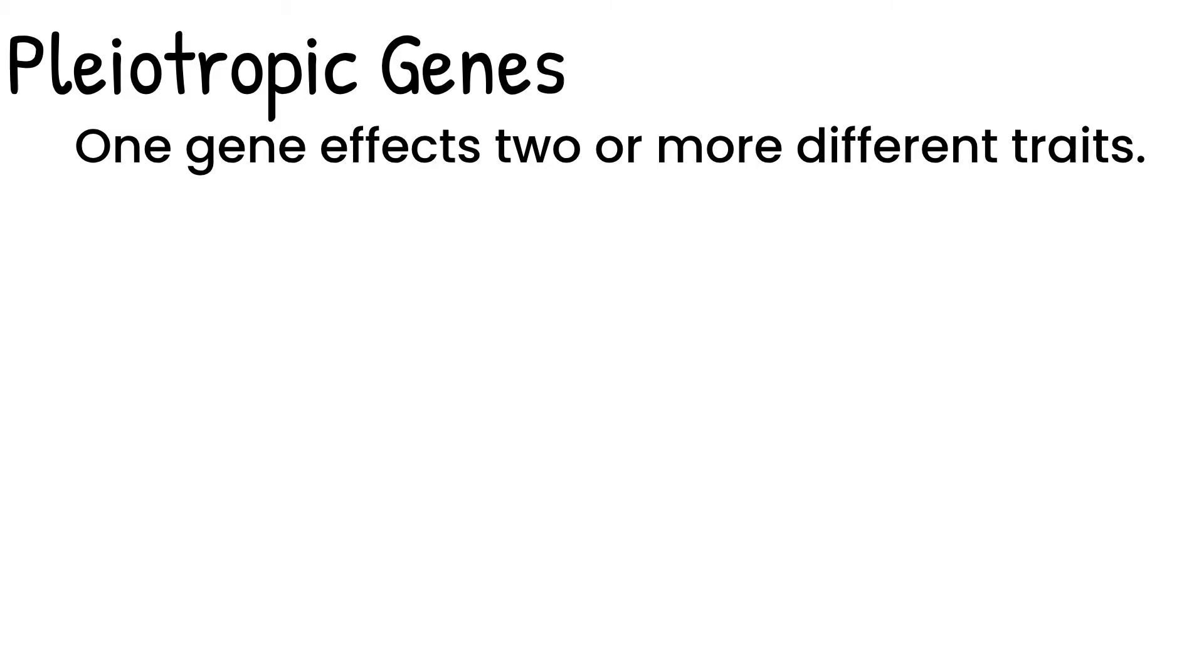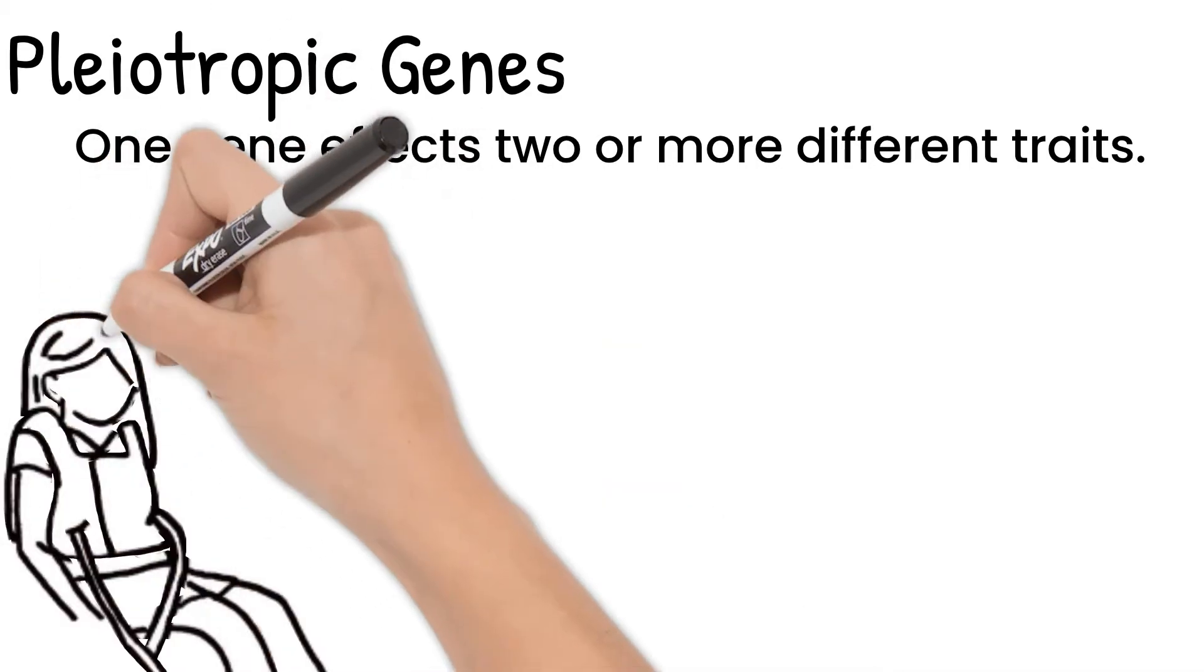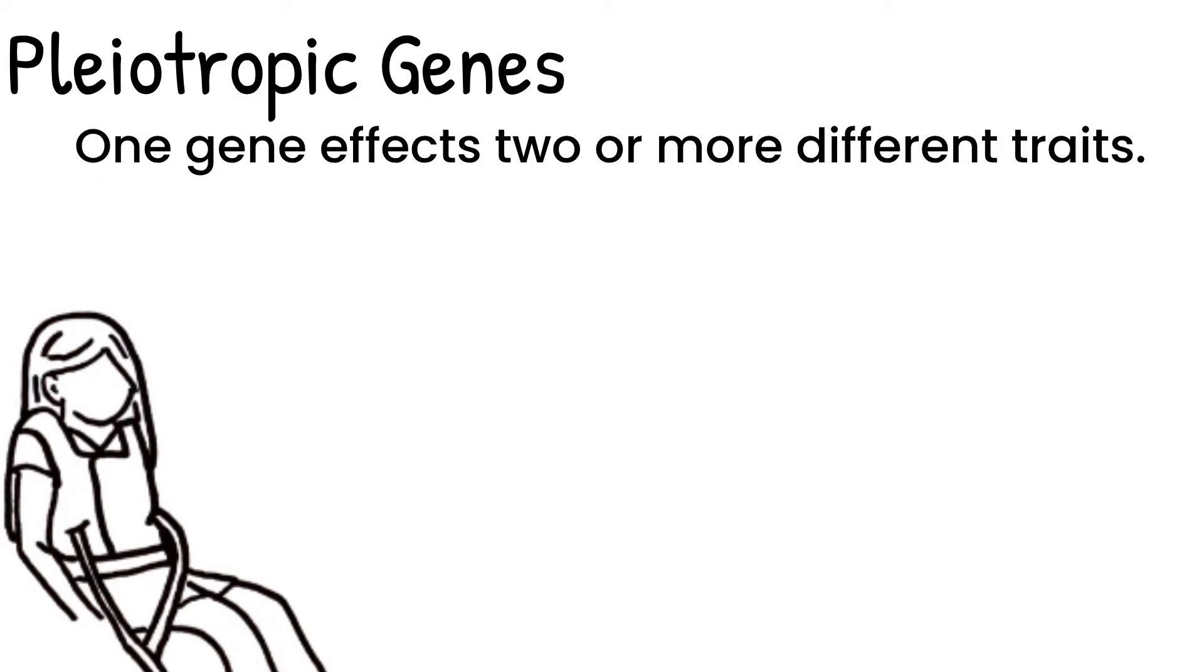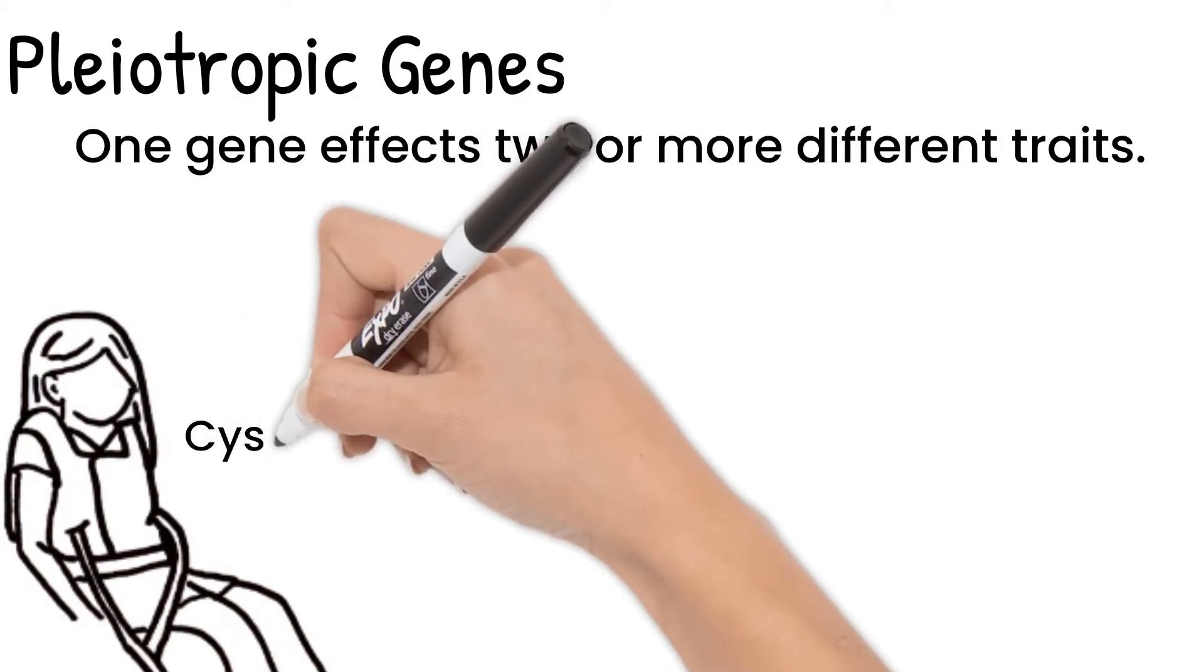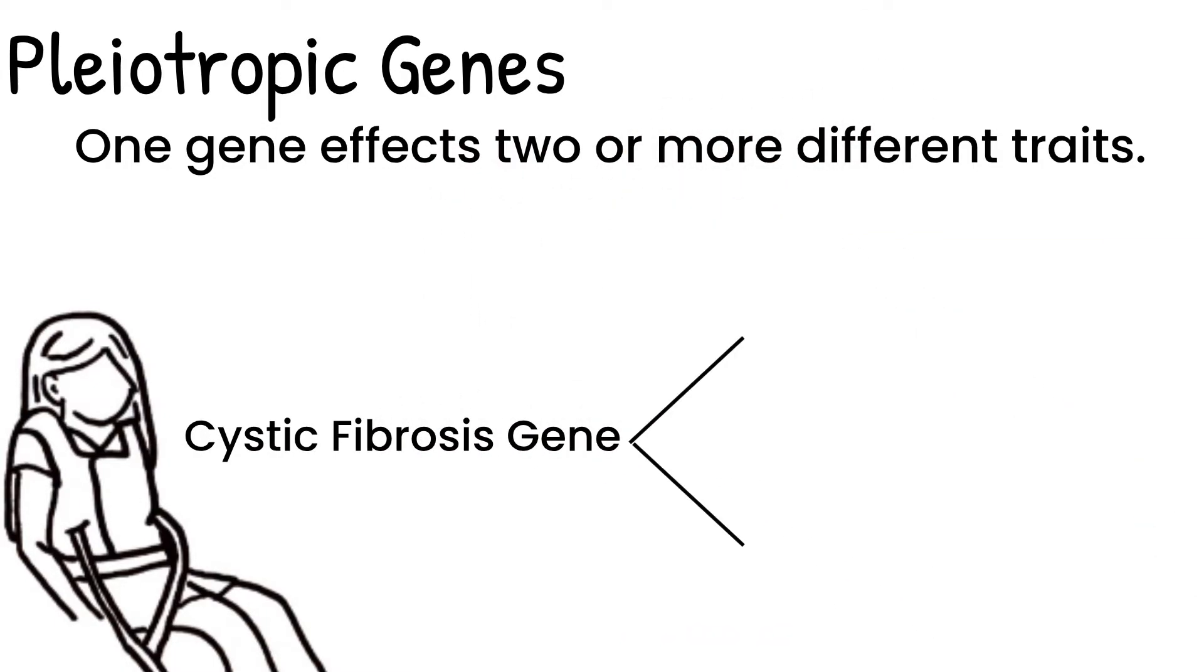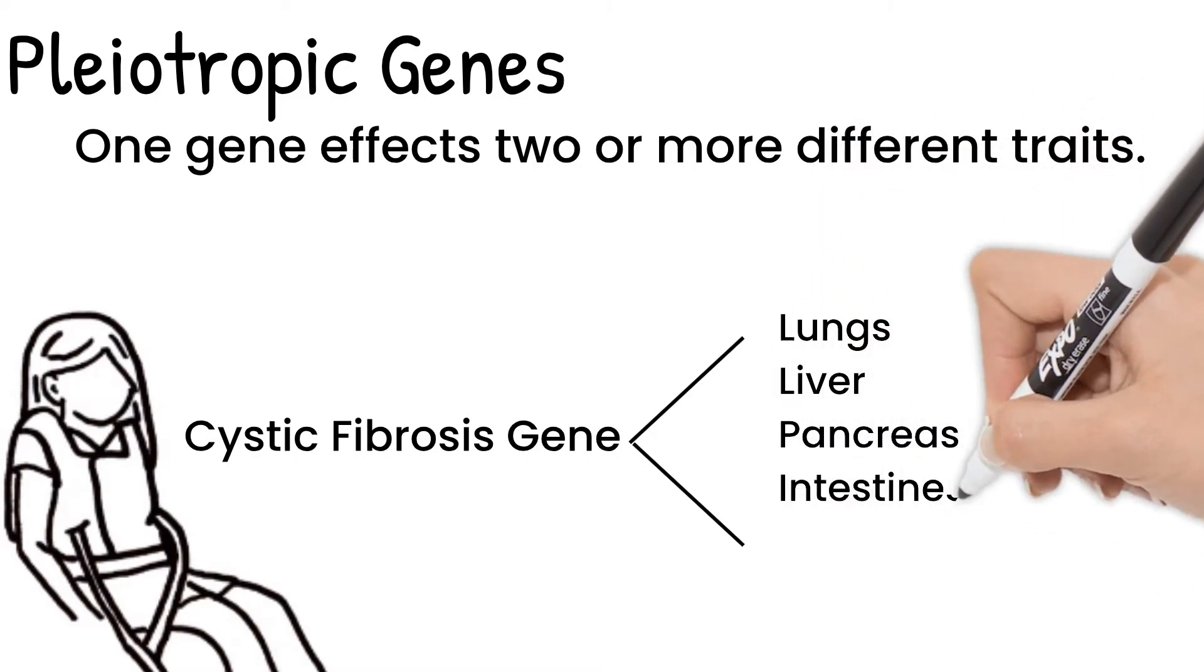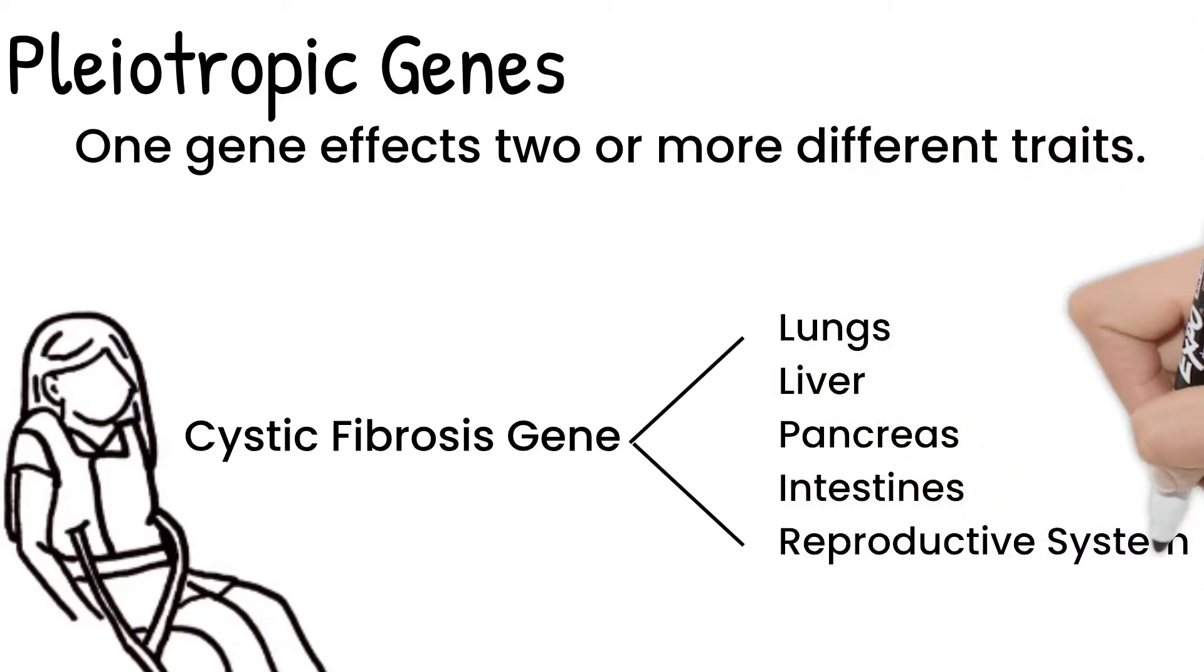When I think of pleiotropic genes, cystic fibrosis comes to mind. Cystic fibrosis is a recessive genetic disorder. When someone has cystic fibrosis, there are many parts of their body affected, including their lungs, liver, pancreas, intestines, and reproductive system. Even though it is one gene, it influences many traits.